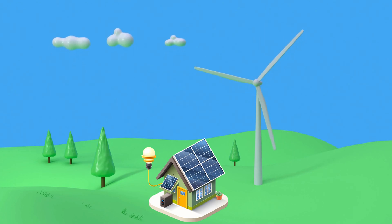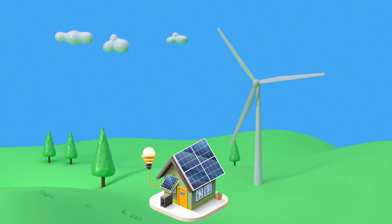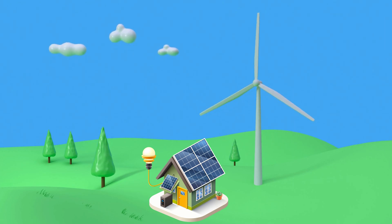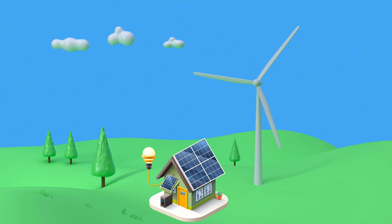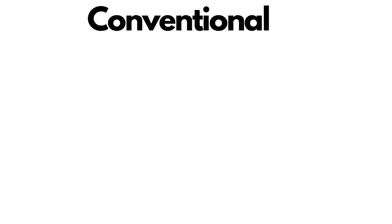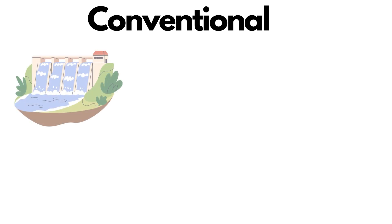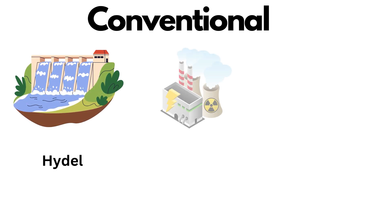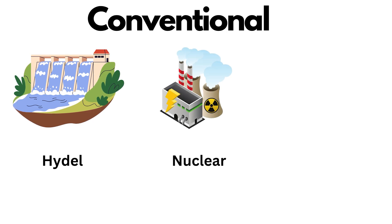Energy can be divided into two categories: Conventional and Non-conventional. Conventional ways of generating electrical energy are Hydel, Nuclear, and Thermal or Gases.